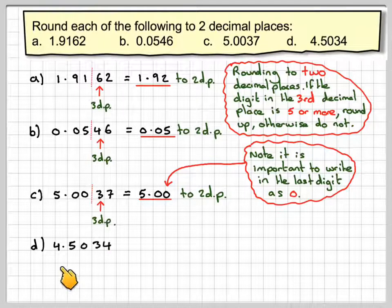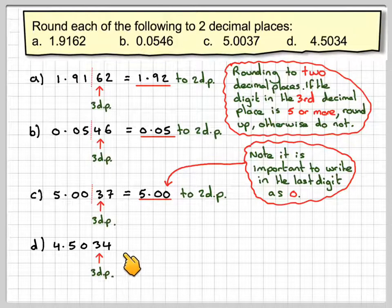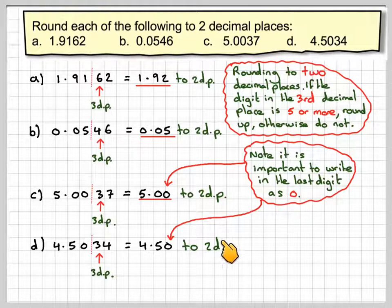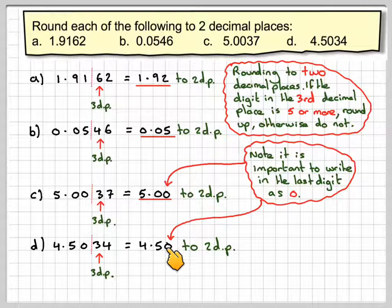Okay, now we've got 4.5034. The third place is a three, again, so that has no effect on that number there. So the answer to this one will be 4.50 to two decimal places. For the same reason, this last zero is important to write in.